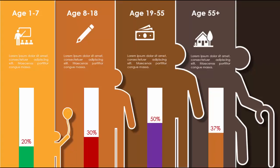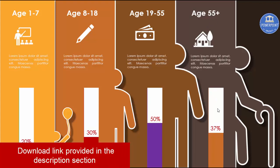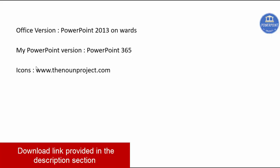In this tutorial I'm going to show you an age statistics infographic slide. I have created four different age groups: the first is ages one to seven, representing how many kids can afford school — which is twenty percent. Between eight to eighteen, how many complete their studies — thirty percent. Between nineteen to fifty-five, how many get jobs — fifty percent. And age fifty-five plus, how many can afford housing — thirty-seven percent.